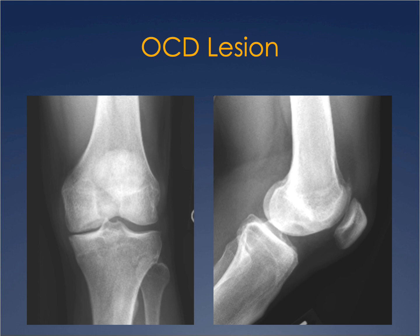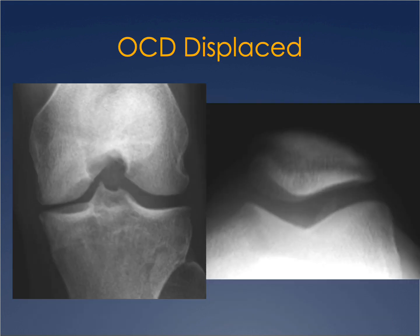The next finding is an osteochondritis dissecans (OCD) lesion, most commonly seen at the inner aspect of the medial femoral condyle as a small lucency. You can identify this better on a flexed PA view, which shows the lesion in the inner aspect of the medial femoral condyle more clearly. Sometimes you can also see a displaced OCD fragment. This is an important area to examine, especially in young patients with knee pain.